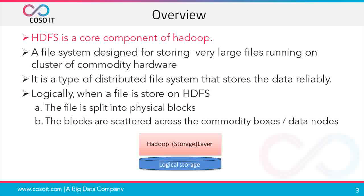HDFS is one of the core components of Apache Hadoop ecosystem, the other being MapReduce. Hadoop is ideal for storing large amounts of data like terabytes and petabytes, and uses HDFS as its storage system. HDFS lets you connect nodes — commodity hardwares contained within clusters — over which data files are distributed. It is a type of file system that is distributed across nodes, and that's why the name is Hadoop Distributed File System.